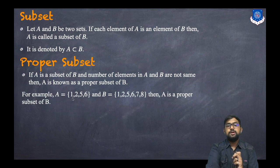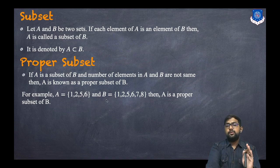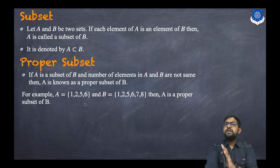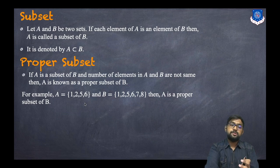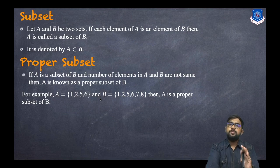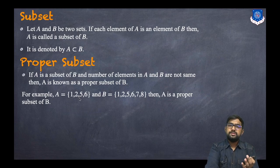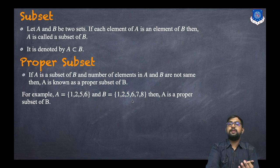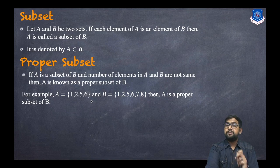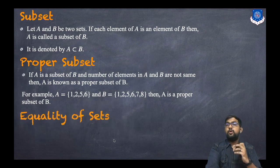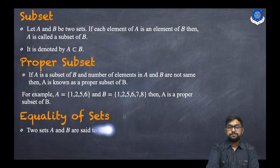For example, A = {1, 2, 5, 6} and B = {1, 2, 5, 6, 7, 8}. All elements of A are contained in B, so A is a subset of B. A has 4 elements and B has 6 elements — since the counts differ, A is a proper subset of B.